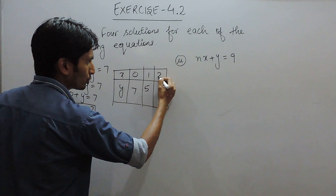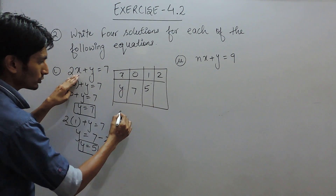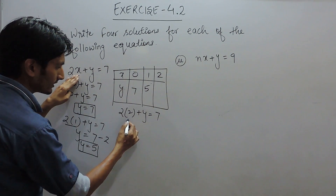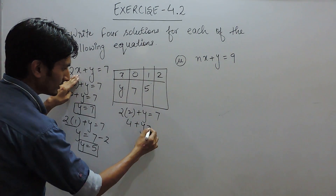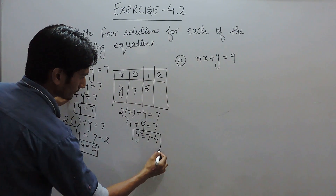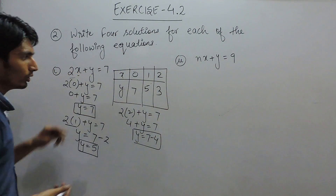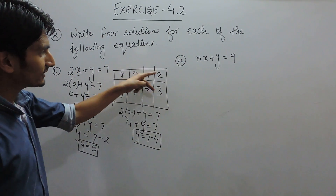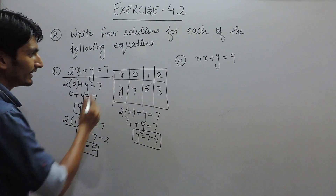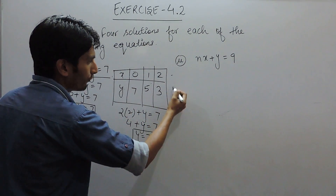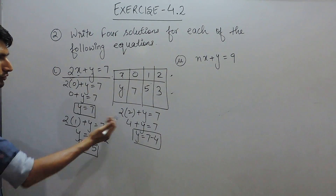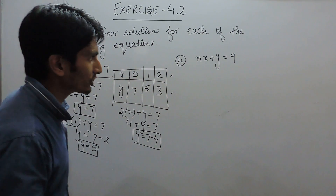Similarly, putting x equal to 2: 2 into 2 plus y equals 7, which gives 4 plus y equals 7, so the value of y is 7 minus 4, which is 3. So these are three sets of solutions for this linear equation. For the fourth solution, put x equal to 3 and solve similarly.